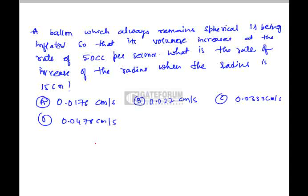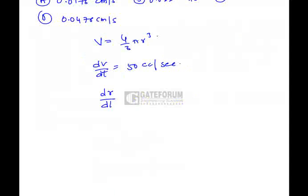So the balloon is always spherical, so the volume of a sphere is 4 by 3 pi r cube. It is inflated at the rate of 50 cc per second, so dv by dt is 50 cc per second, and we have to find the change in radius, dr by dt, when r equals 15.